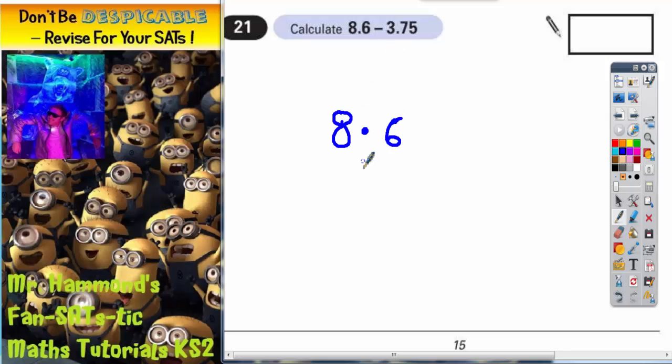Now, we've got to make sure we line up the decimal points. So we might as well put the point in underneath first. The 3 comes before the decimal point, so that's going to have to go underneath the 8. And the 7 comes after the decimal point, so that's going to go underneath the 6. And it's 3.75, so we'll just pop the 5 on the end there.